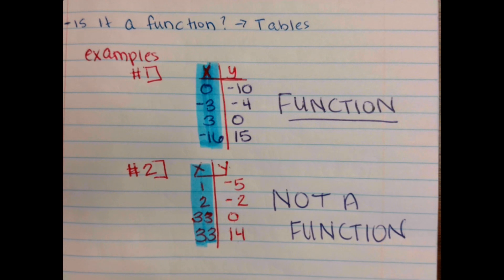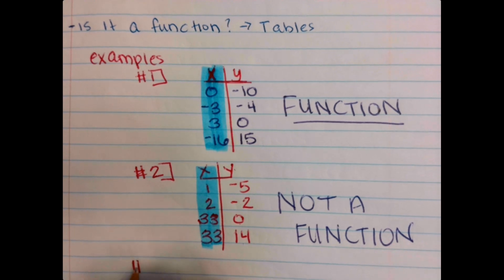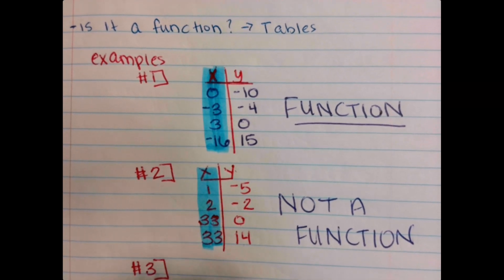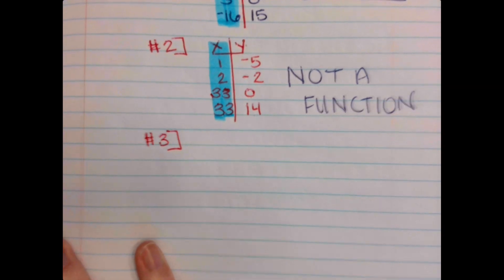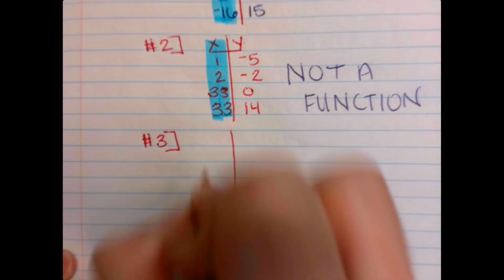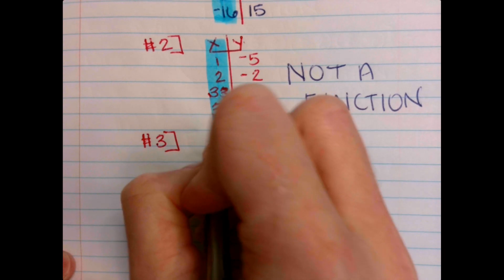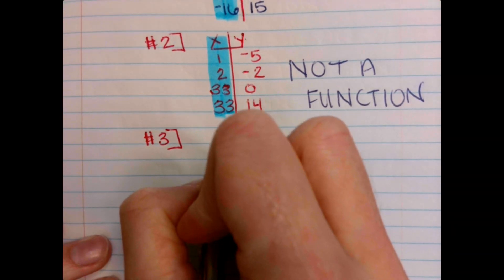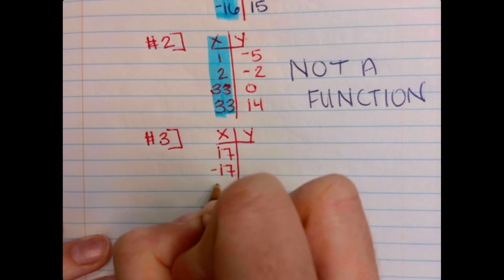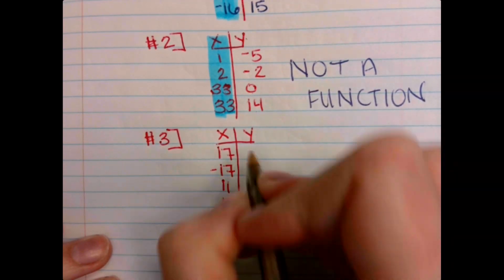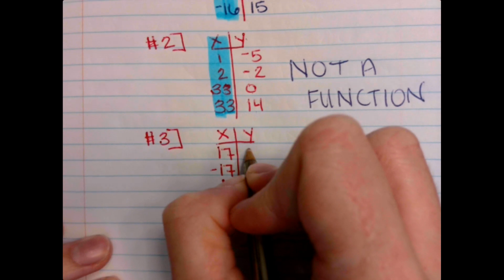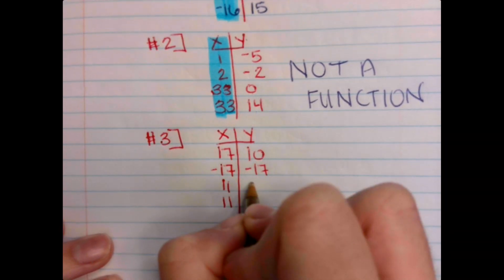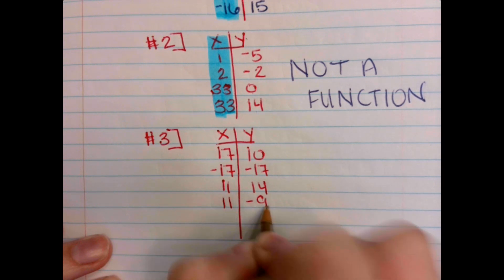Let's do another one. I think you should be feeling pretty darn good about this, but we'll do one more. Actually, we'll do two because I want to show you one special case. X and y, our input on this is going to be 17, negative 17, 11, 11. On the right side, we will have 10, negative 17, 14, and negative 9.